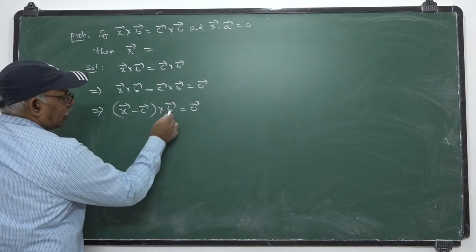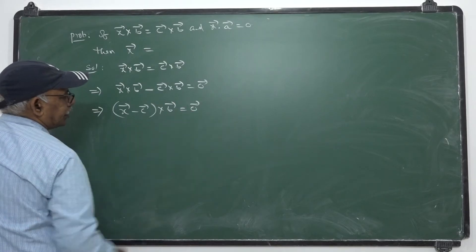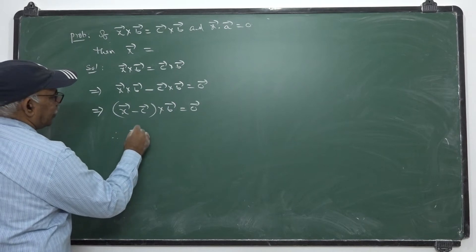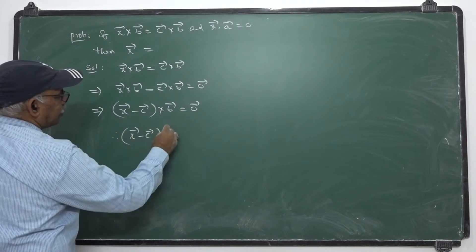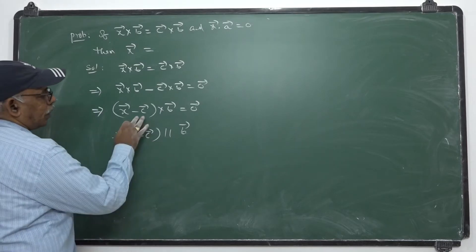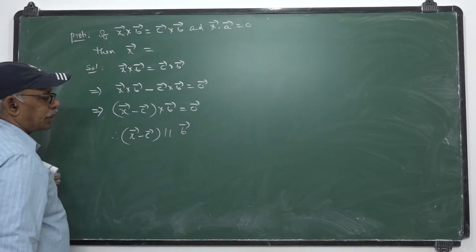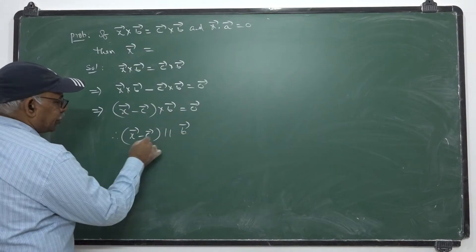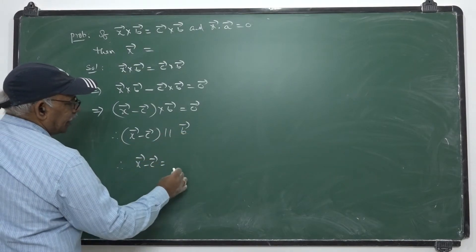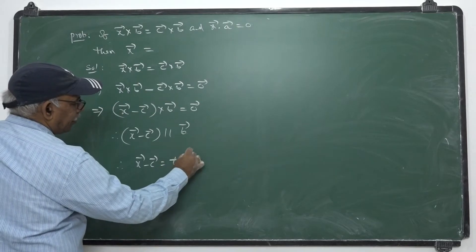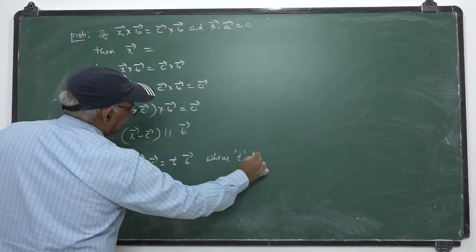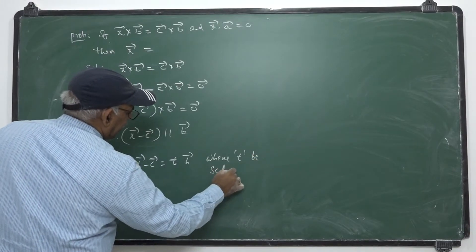The cross product of these two vectors is 0̄. The cross product of two vectors is 0̄, hence x̄ - c̄ is parallel to b̄. Cross product of parallel vectors is 0̄. Since these two are parallel, therefore x̄ - c̄ = t·b̄, where t is a scalar or a real number.